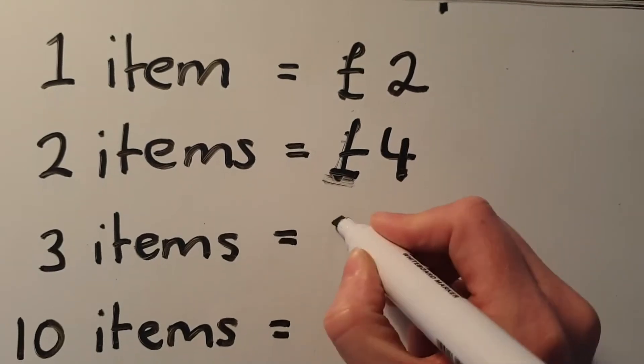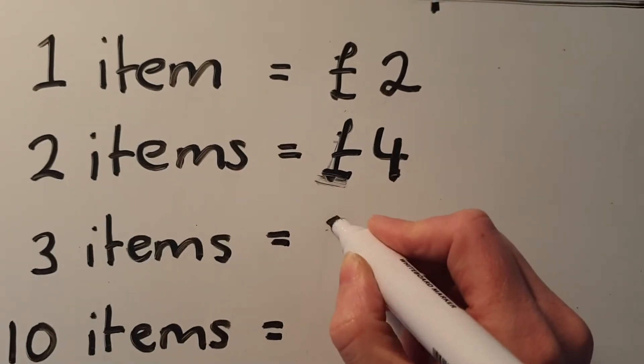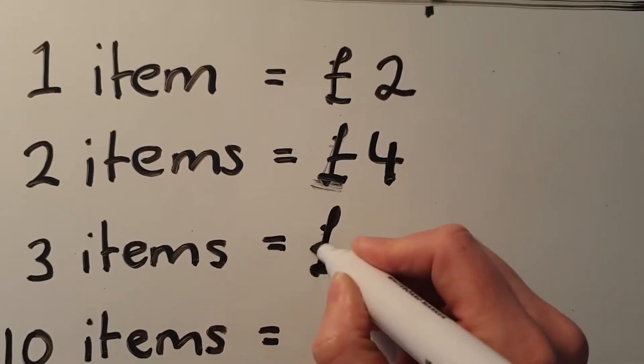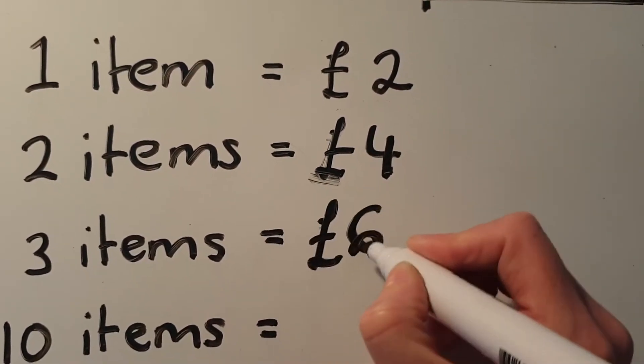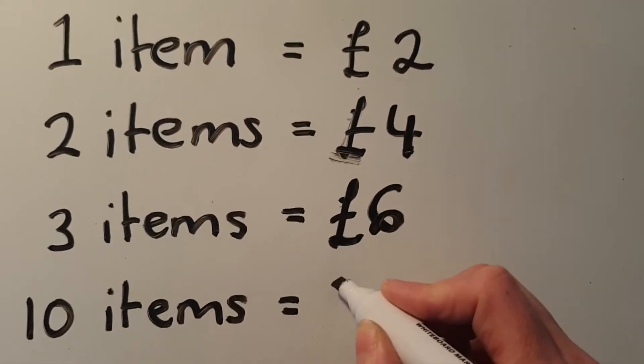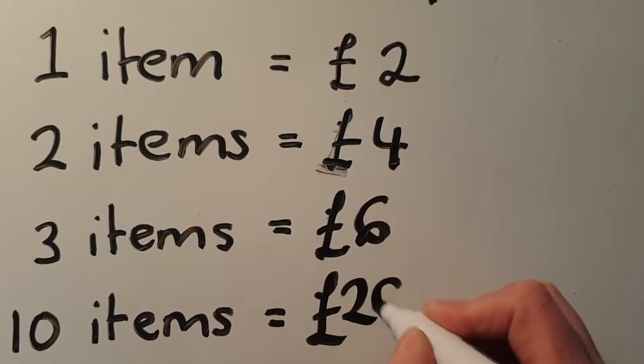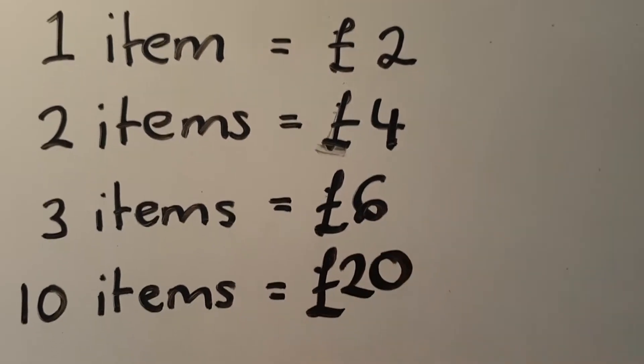Three items would be three lots of two, so six pounds, and ten items would be ten lots, so twenty pounds.